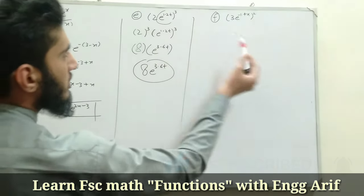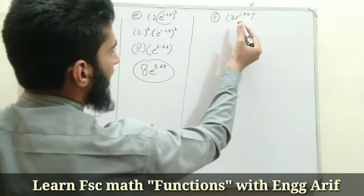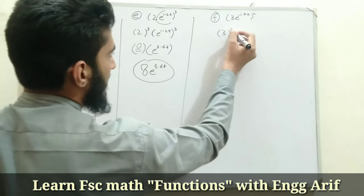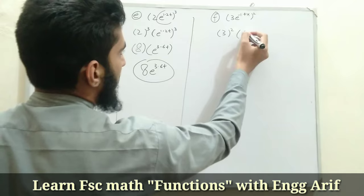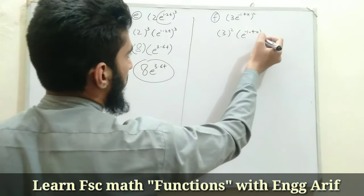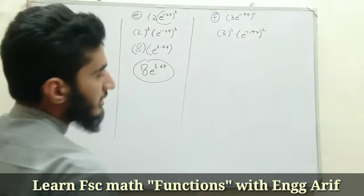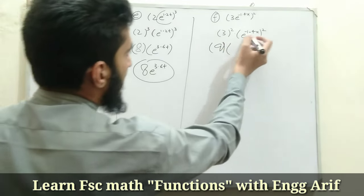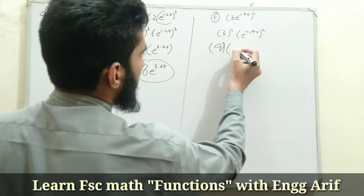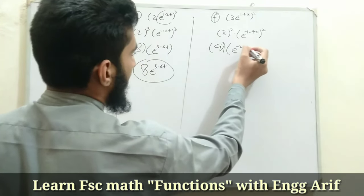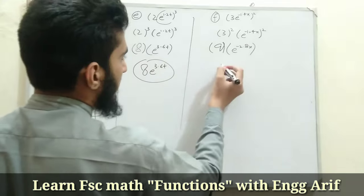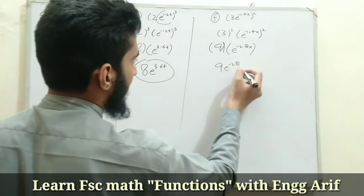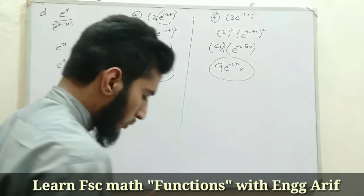For part f we have (3e^(-1.4x))^2. The power 2 applies to both terms. So it becomes 3^2 · (e^(-1.4x))^2. Now 3^2 = 9, and applying the power-of-a-power law: e^(-1.4x · 2) = e^(-2.8x). The final result is 9e^(-2.8x).